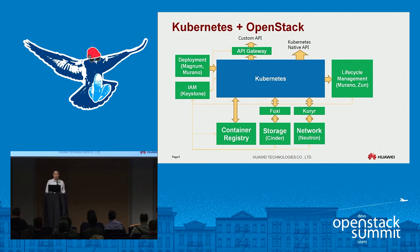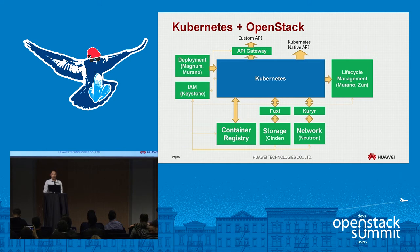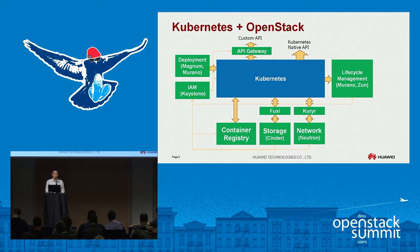On the right-hand side, you can see we use OpenStack projects for lifecycle management of Kubernetes, like Murano and the new Zun project — there's a design summit for that project if you're interested. Going north, you can either use the native Kubernetes API or have an API gateway that integrates Keystone to provide authentication and authorization, with your custom API on top.